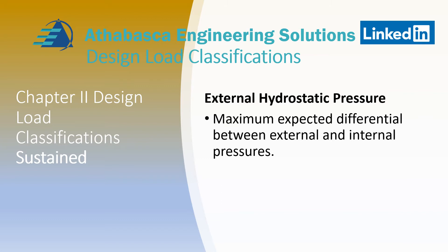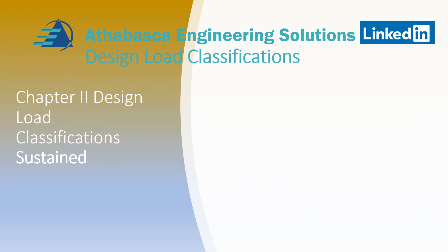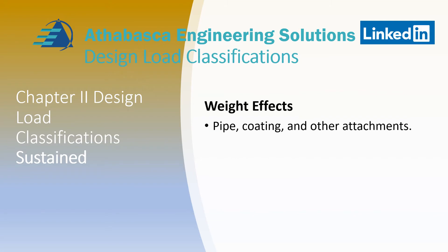External hydrostatic pressure is the maximum expected differential pressure between the external and the internal pressures, with more detail in subsequent editions. Weight effects include piping, coating, and other attachments that may be on the pipe, and they include variability such as tolerances.